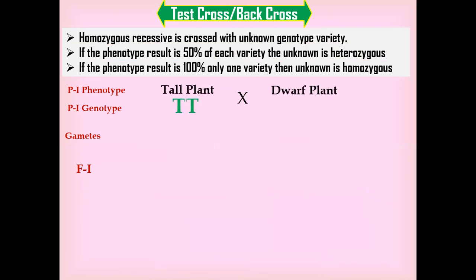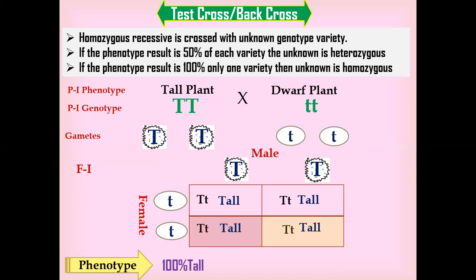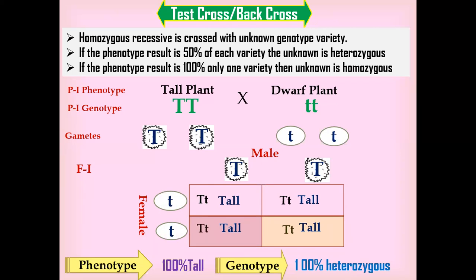If the unknown variety is homozygous dominant crossed with the homozygous recessive, the male plant produces one type of pollen grain and the female plant produces one type of ovule. In the F1 Punnett square, the ovule with lowercase t fertilizes with the capital T pollen grain and produces a heterozygous tall variety. All combinations yield the same result: the phenotypic result is 100% tall and the genotypic result is 100% heterozygous, meaning the unknown variety is homozygous dominant.